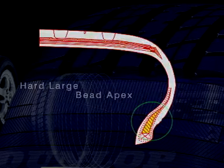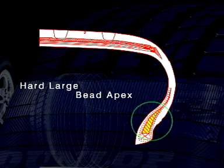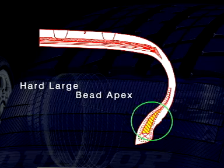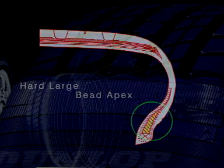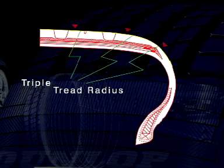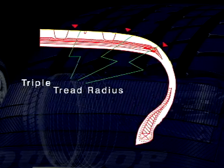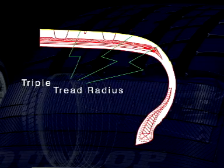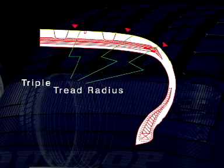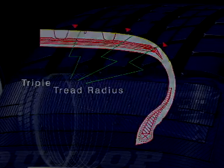Hard Large Bead Apex, bagian bead yang kokoh dan lebar, menjamin BAN tetap melingkar di pelek dengan tepat. Triple Great Radius, memperluas permukaan ban yang bersentuhan dengan jalan pada saat berbelok, sehingga menghasilkan daya dorong dan pengendalian yang lebih besar.